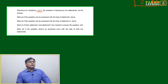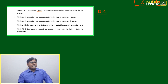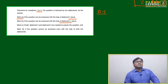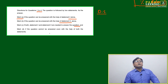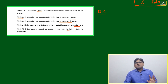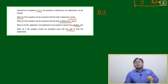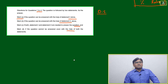Practice questions one to four are related to data sufficiency. Some instructions are given: mark option A if the question can be answered with statement 1 alone, mark B if statement 2 alone is sufficient, mark C if both statements are needed, and mark D if the question cannot be answered even with both statements combined.